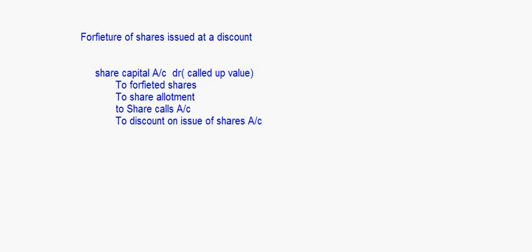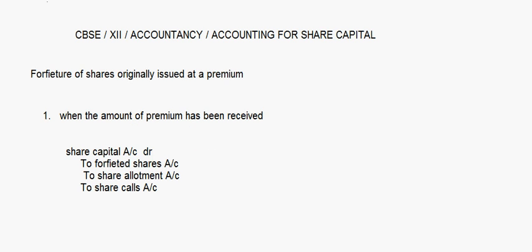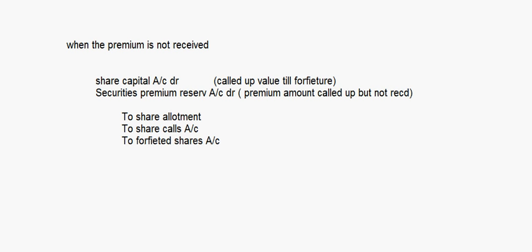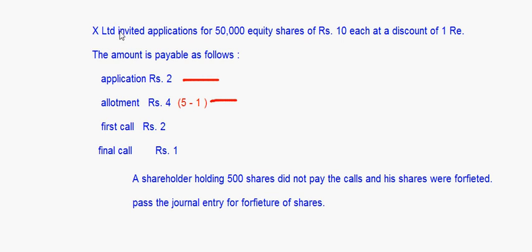So we have taken up two things today. The first was forfeiture done on shares originally issued at a premium - we saw two cases: when the amount of premium has been received, and when it has not been received. The second was forfeiture of shares issued at a discount, where there is only one case. We took up a question to illustrate both. With that I'll come to the end of this session.